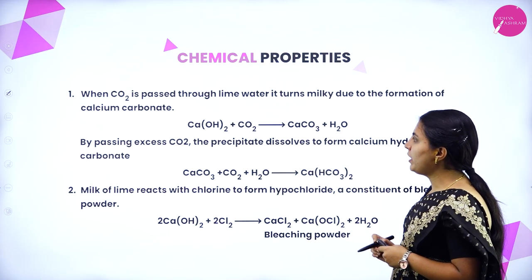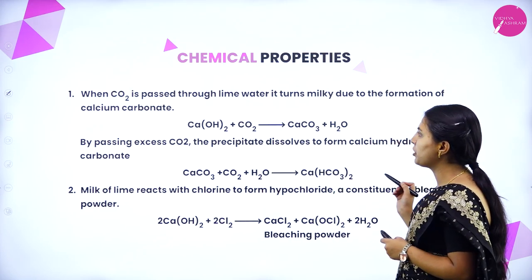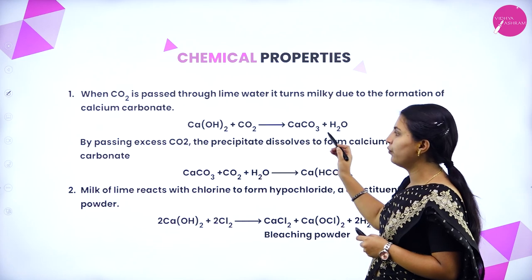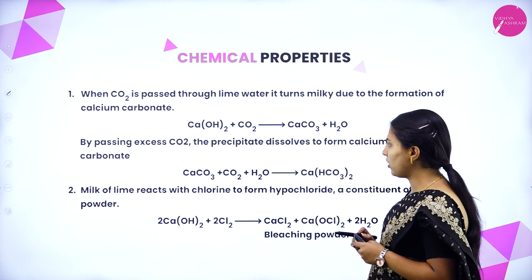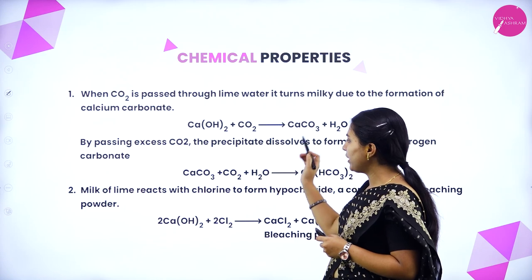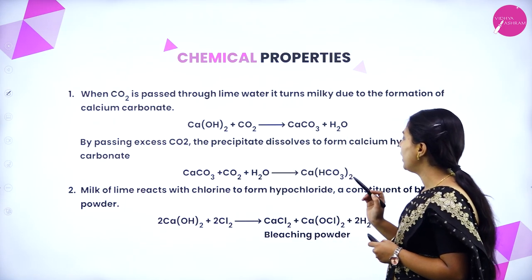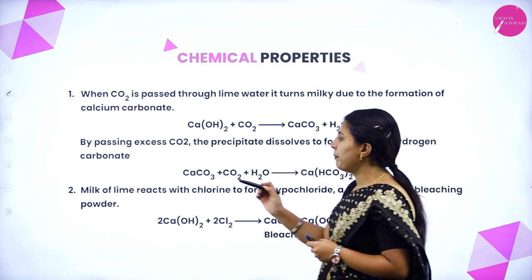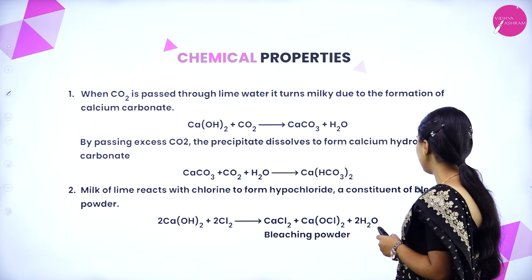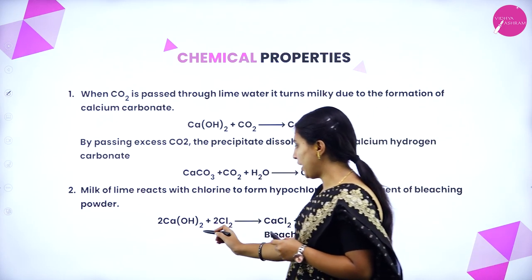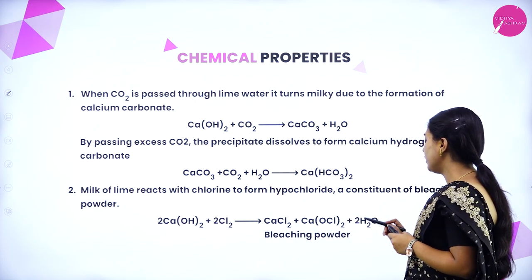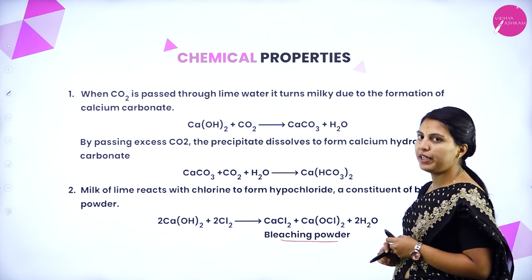Chemical properties: when carbon dioxide is passed through lime water, it turns milky due to the formation of calcium carbonate. When calcium hydroxide is treated with carbon dioxide, it forms calcium carbonate and water. By passing excess carbon dioxide, the precipitate dissolves to form calcium hydrogen carbonate. Milk of lime reacts with chlorine to form hypochlorite, a constituent of bleaching powder — when calcium hydroxide is treated with chlorine, it forms calcium chloride and calcium hypochlorite with water.